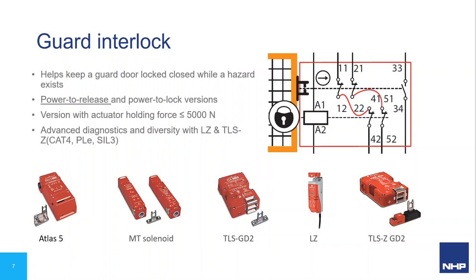The 440 GMT solenoid switch has a holding force of 1,600 newtons, heavy-duty die-cast alloy housing, and a removable rotatable head with up to eight actuator positions. Uniquely, it uses one contact set operated by both solenoid and actuator, ensuring safety contacts are closed only when the actuator is inserted and locked. The TLS GD2 achieves up to 2,000 newtons holding force via locking pins mounted through the body into the guard frame, with a rotatable head giving four key entry slots. It also has an escape release option using a cable attachment accessible from inside the guarded area, so a person cannot be trapped inside.